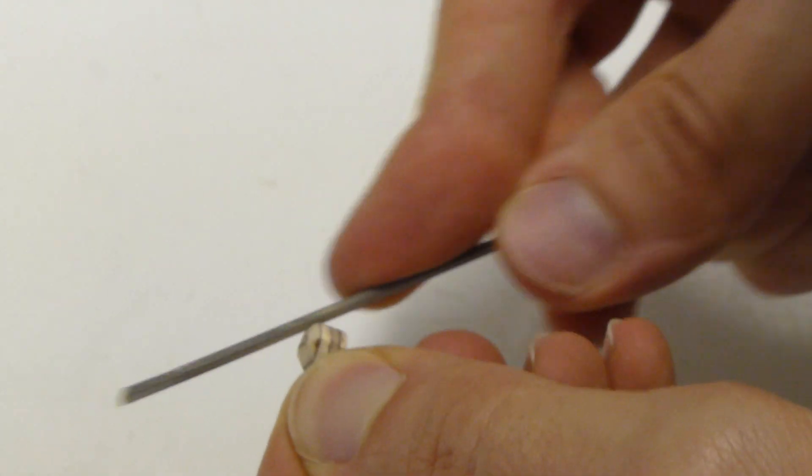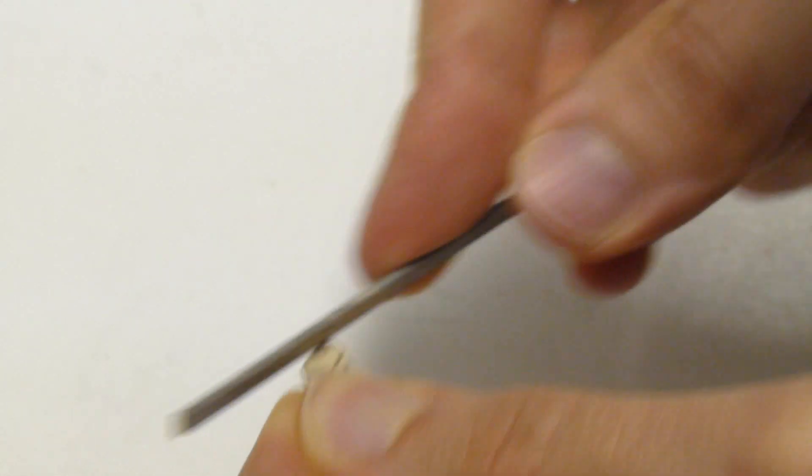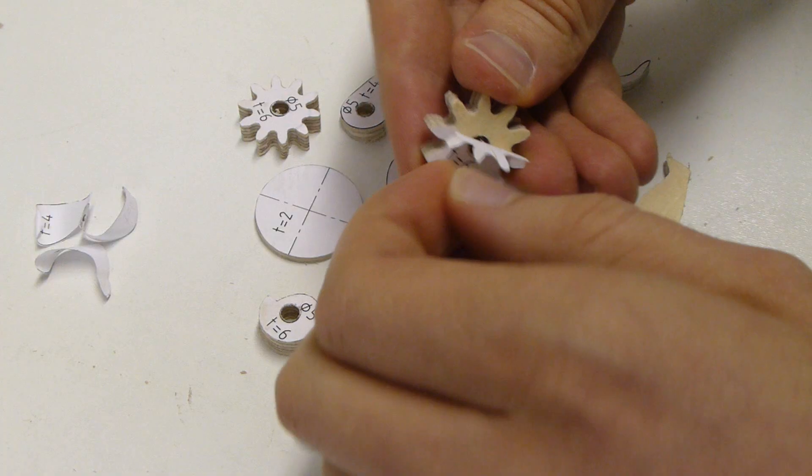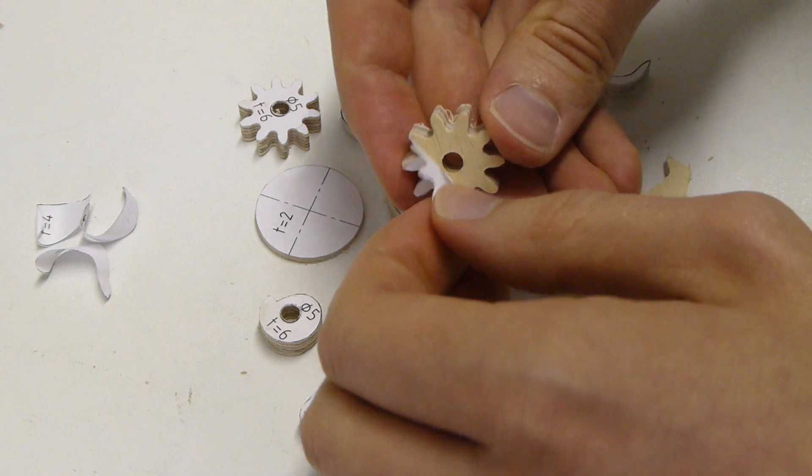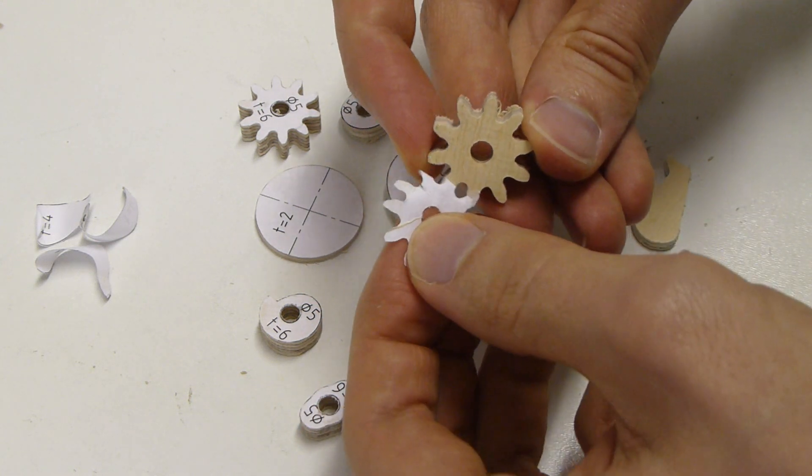Den Feinschliff macht man am besten von Hand. Zum Schluss das Papier vom Holz abziehen. Einfacher geht es, wenn man die Teile vorher mit einem Heißluftgebläse erwärmt.